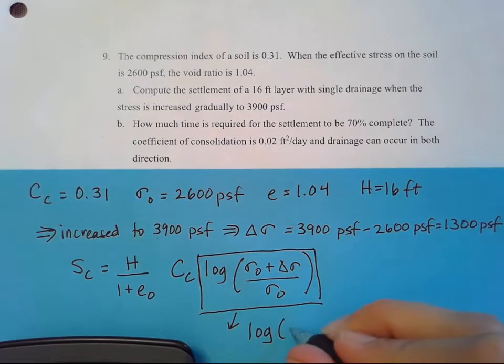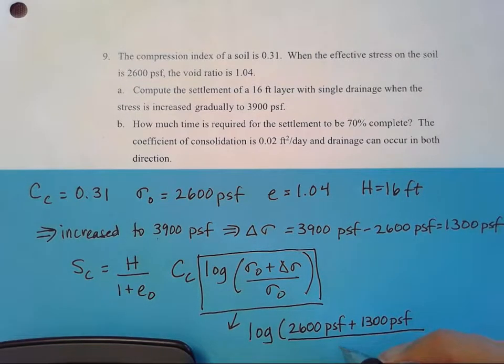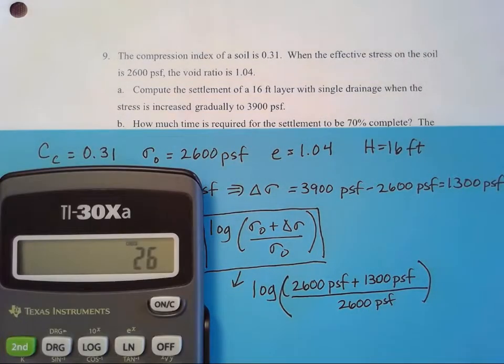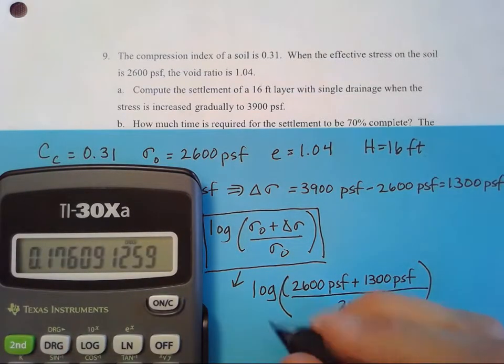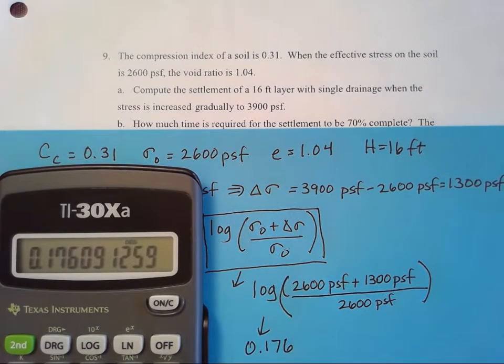So I have the log of 2,600 PSF plus 1,300 PSF divided by 2,600 PSF. I'm not going to take the log until I've done all of that math inside the parentheses. 2,600 plus 1,300 divided by 2,600. So I get 1.5. That's nice and easy. And I'll take the log of that and I get 0.176.